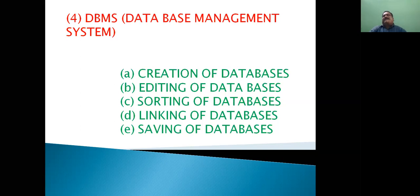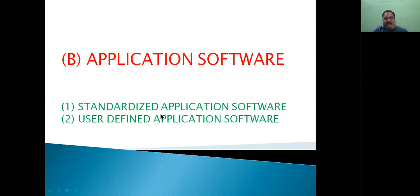Now moving forward, as I showed earlier in the diagram, software is of two types — and the second type is application software. These softwares are designed to perform any task for the user's requirement. They are also of two types: standardized application software and user-defined application software.